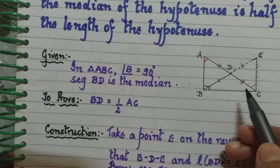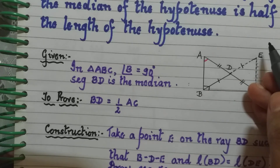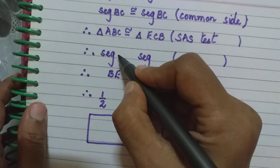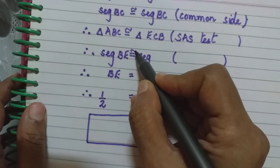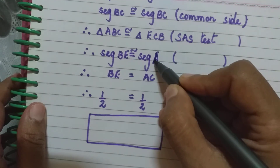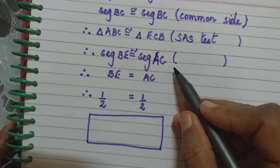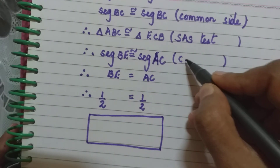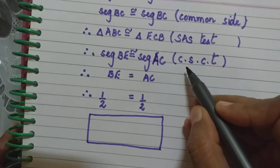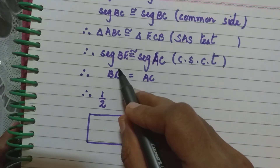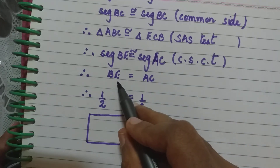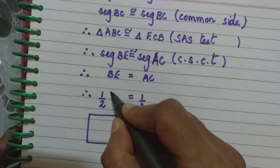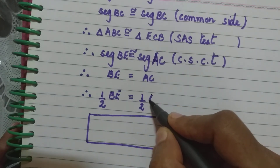From this congruence, segment BE is congruent to segment AC by CSCT — corresponding sides of congruent triangles. So BE equals AC. Multiplying both sides by half, we get half of BE equals half of AC.